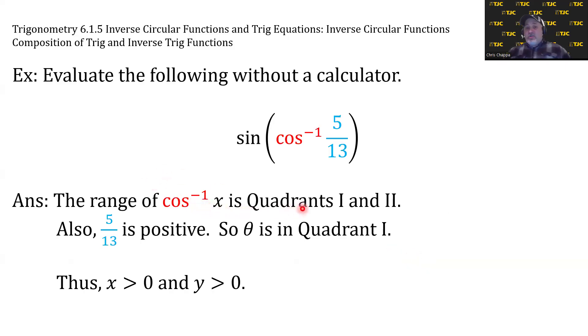We know the range of cosine inverse is quadrants 1 and 2, and also 5 thirteenths is positive. So this puts us in quadrant 1, because the range of cosine inverse is quadrants 1 and 2. We're doing an inverse cosine of a positive, so our cosine would have to be positive, which is in quadrant 1. Now, in quadrant 1, x and y are both positive. We'll need to know that later.